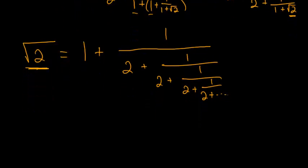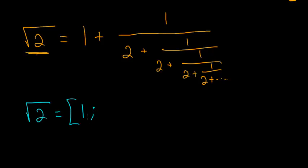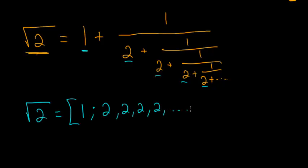One way you can represent continued fractions is: the square root of 2 is equal to 1 semicolon — you only put a semicolon after the first number — and then you just write the repeating numbers. So for the square root of 2, we would have 2, 2, 2, 2, 2, and so on — that goes on forever.